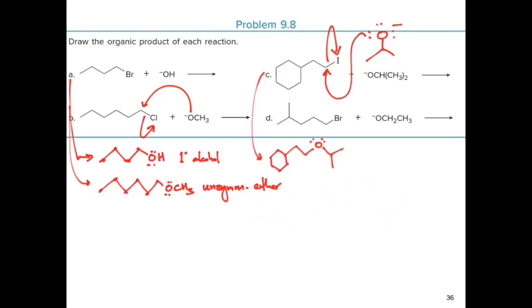For the last reaction, an ethoxide ion attacks the electron-deficient carbon atom, and the bromine acts as the leaving group, resulting in another ether product.